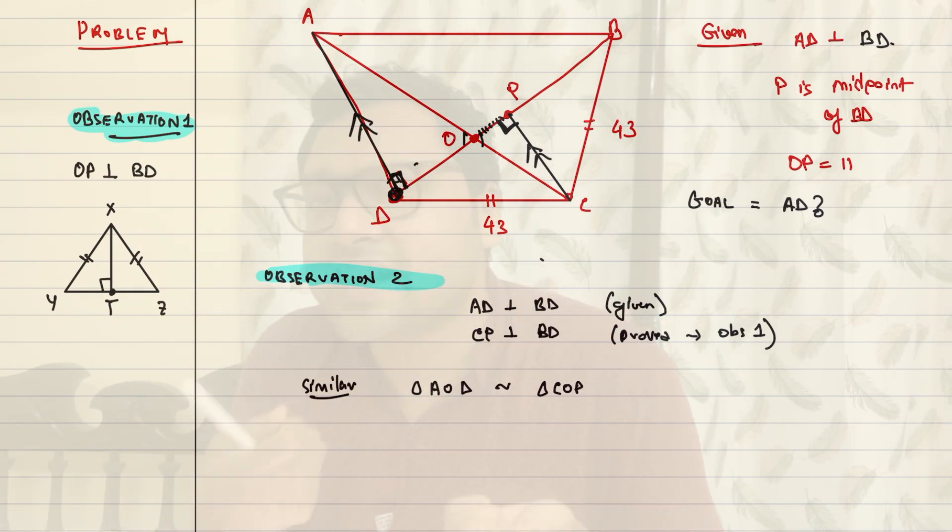Then one of the students said, why don't you assume that BP is X? BP is X. Then, obviously, DP is also X. So, this one, and this little one, is X minus 11. Because OP is 11. That's given. So, DO, this little one, is X minus 11. And this is X plus 11.